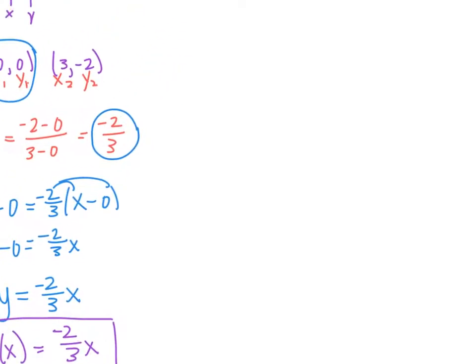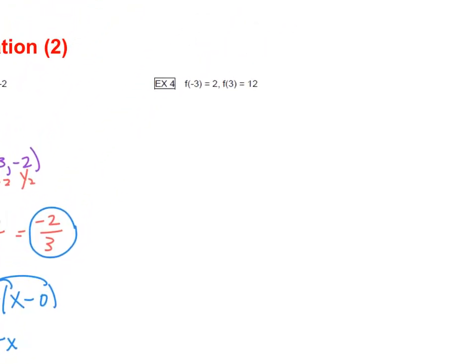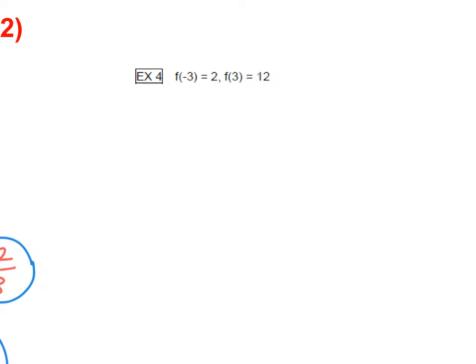All right, so these problems are pretty repetitive, and once we get the hang of them, then these will be great. So just remember, you want to rewrite these as ordered pairs, so you have (-3, 2), and you have (3, 12).